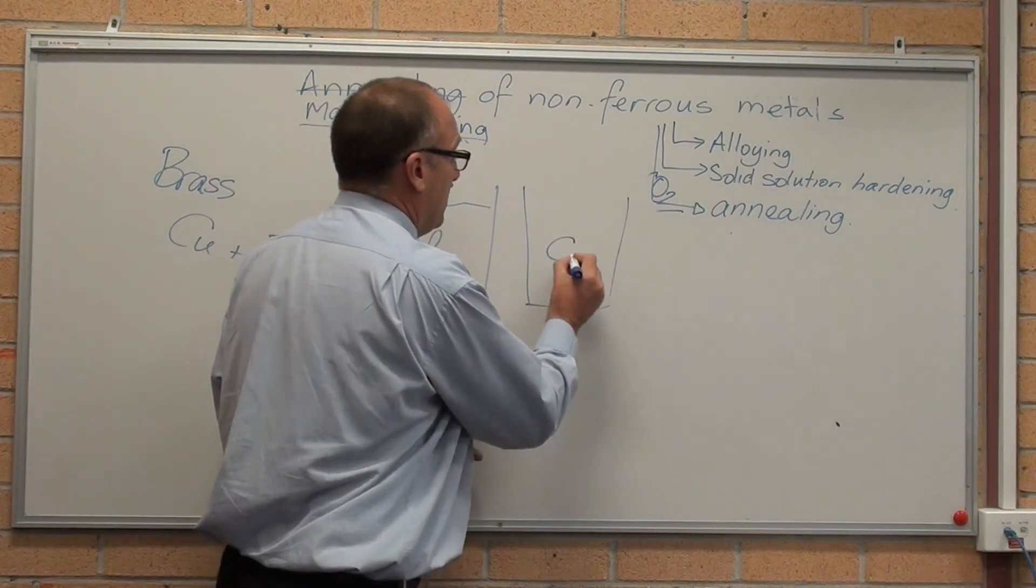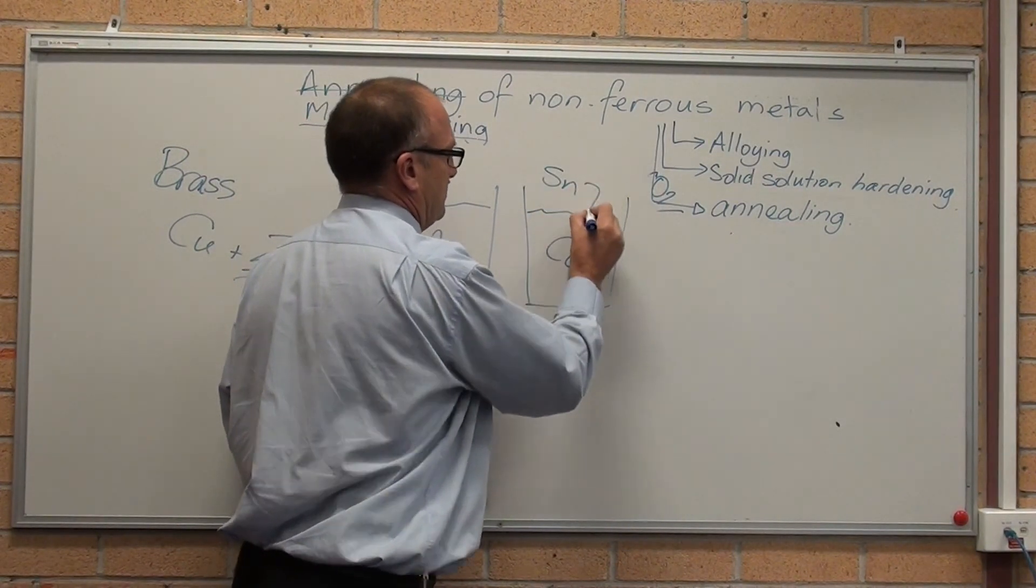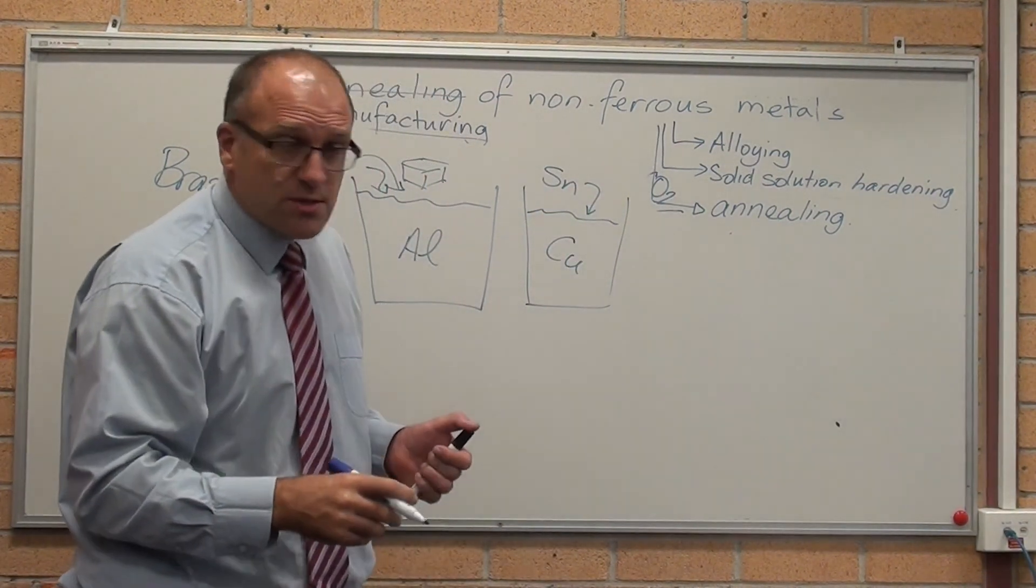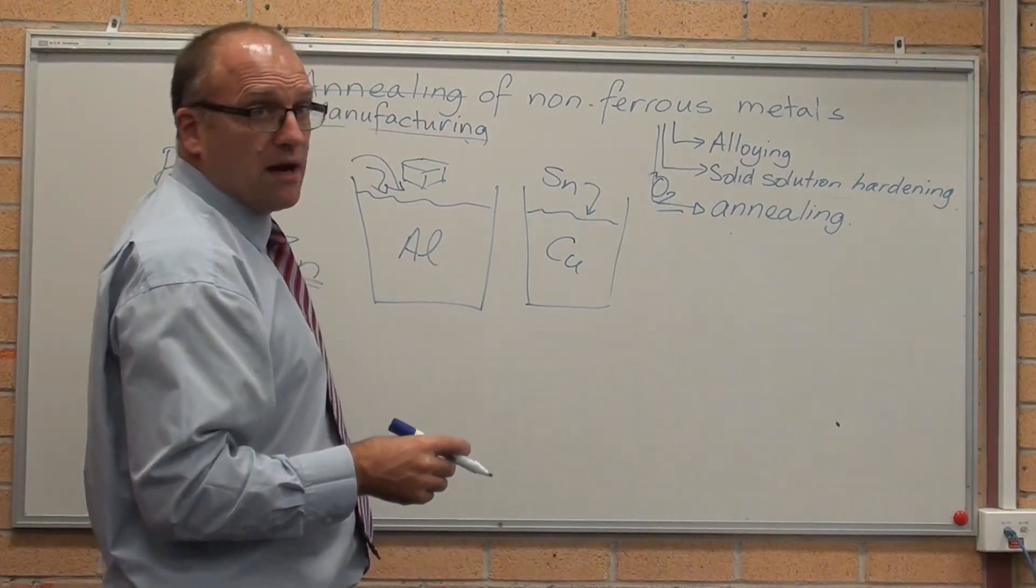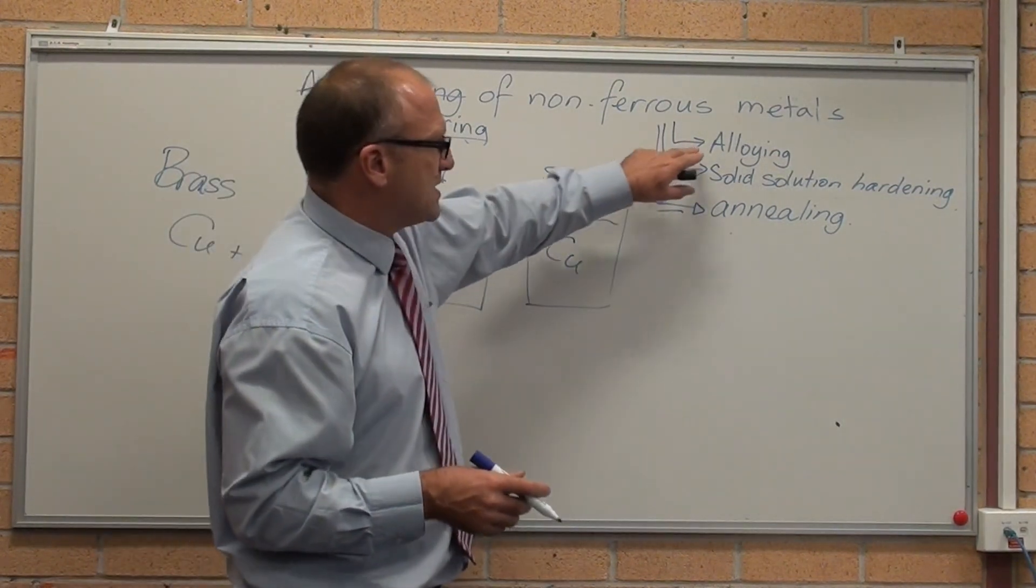It might be copper. However, if you add tin, you make bronze. So we are making the range of options. That's alloying.